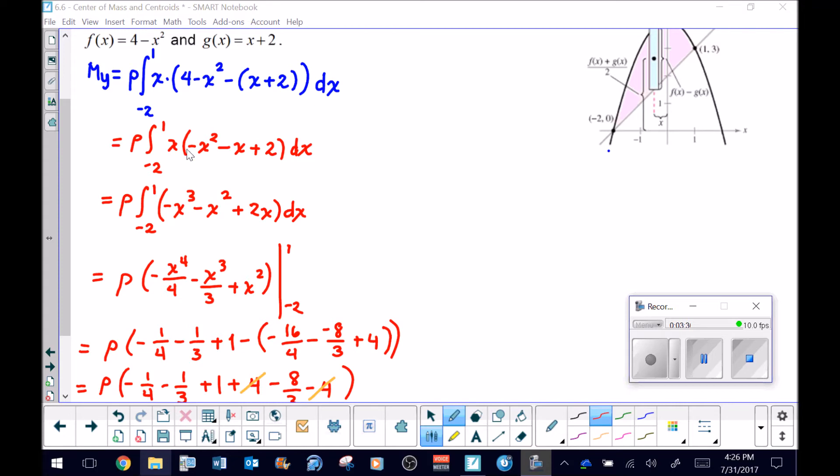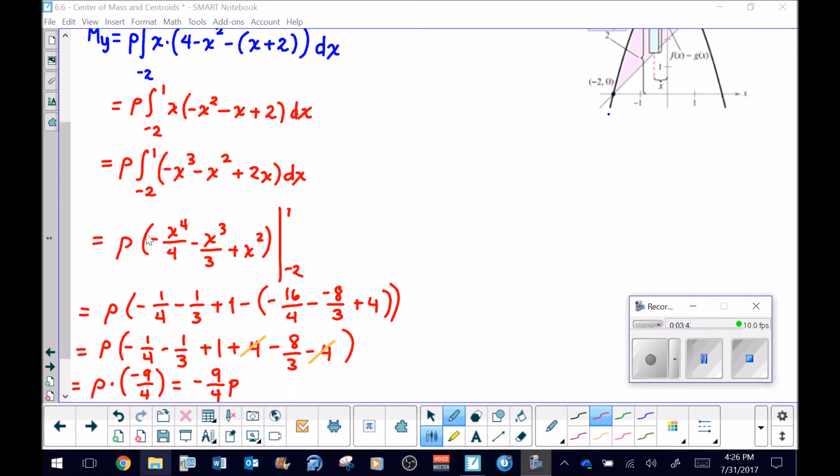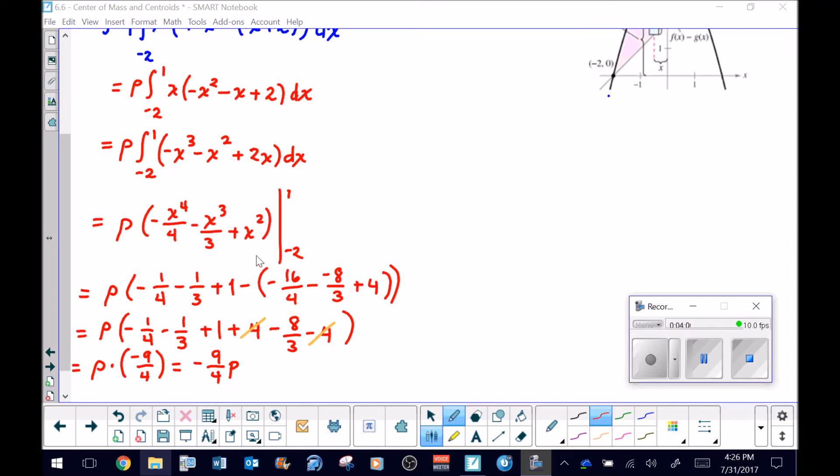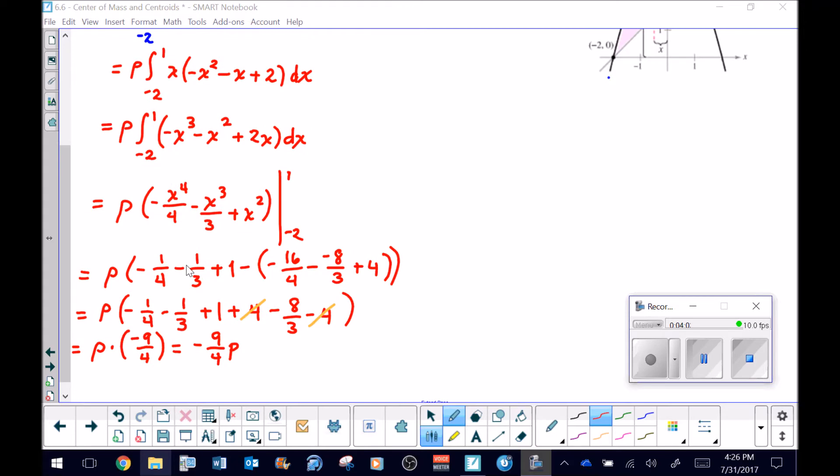We'll pick up right where we left off here with what you see in red. You can see I spent quite a bit of time simplifying the expression inside the parentheses so that I could distribute the x from the outside. Then we perform our anti-differentiation, a very critical step with the boundaries of one and negative two. It's just arithmetic to combine like terms and eventually simplify to get negative nine-fourths times ρ.